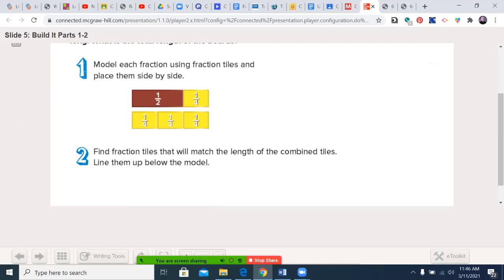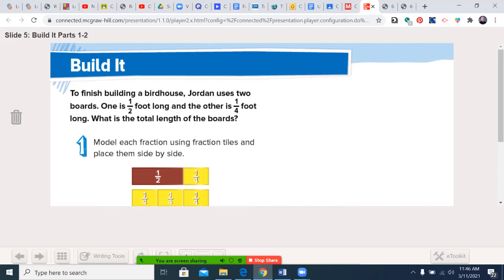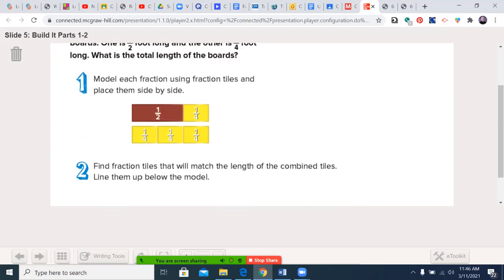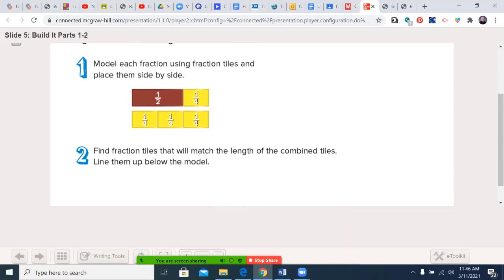So step one, and this is in your text, model each fraction. For one-half plus one-fourth, you can see right here, and place them side by side. So right now you just have this top row. Now you're going to find fraction tiles that will match the length of the combined tile. So I need from here to here, and line them up below the model. So you can see how they lined up one-fourth and one-fourth and one-fourth to equal up one-half and one-fourth.